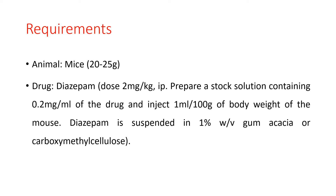Requirements: animals required are mice weighing 20-25 grams. The drug used is diazepam at a dose of 2 mg per kg intraperitoneally. We prepare a stock solution containing 0.2 mg per ml of the drug and inject 1 ml per 100 grams of body weight. Diazepam is suspended in 1% weight by volume gum acacia or carboxymethyl cellulose. A plus maze apparatus is also required.